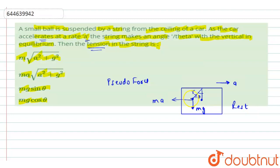And this ball is having the mg weight acting in downward direction. So now if we take the resultant of these two forces, then it will be in this direction, let's say which is given as R. So now we are given the ball is in equilibrium at this position, so the net force acting on the ball must be zero.